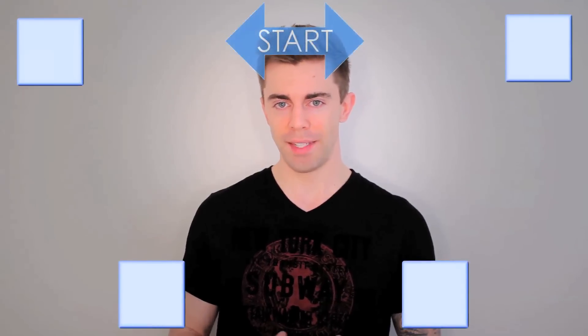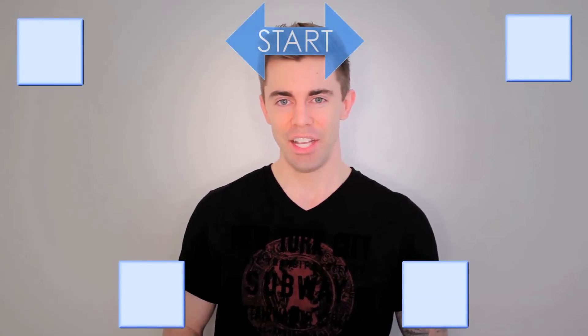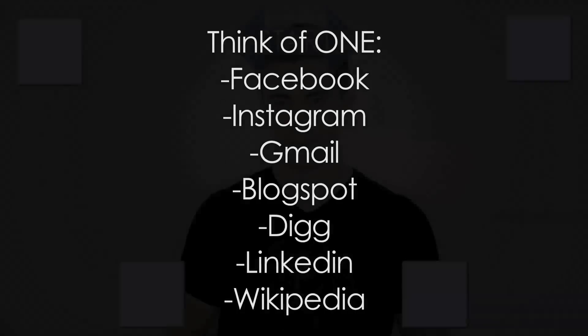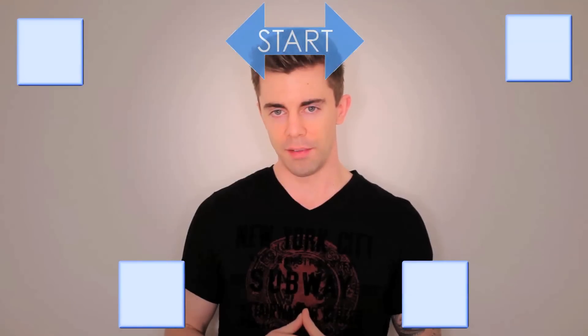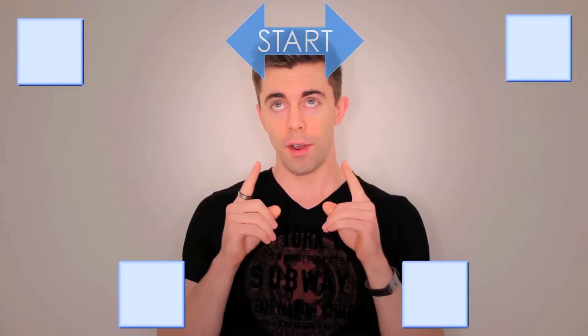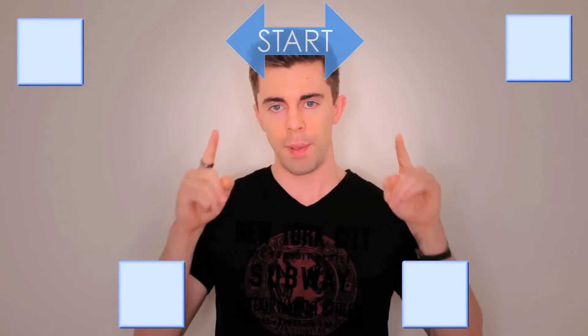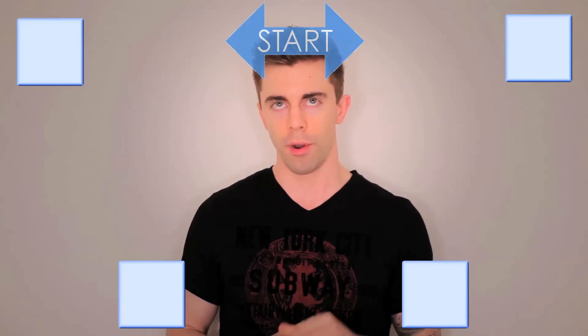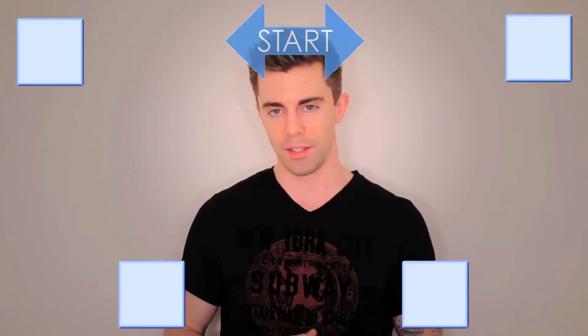We'll turn the screen into kind of a board game with spaces that you can move around. Next you'll see a list of popular social networks and websites. Think of any one of these in the list and make sure you can spell it. If you need to, you can pause here to memorize it. Now I don't know which of these you're thinking of, but beginning on Start you're about to move around the screen spelling your word. Use one space for each letter in your word without counting the Start space.